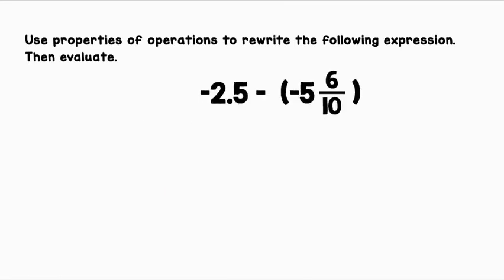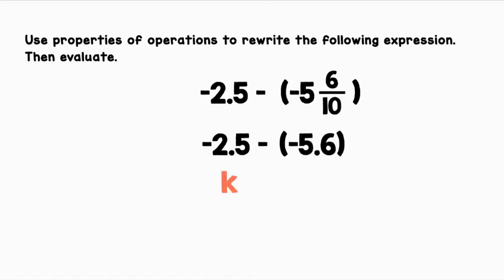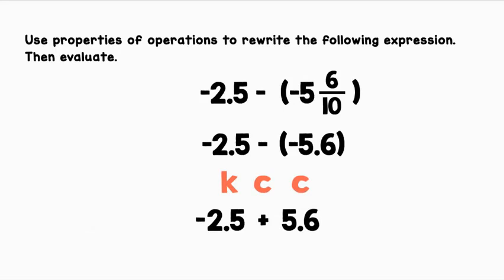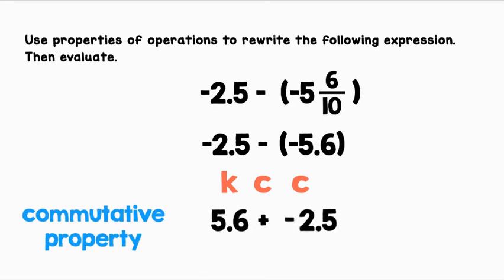Use properties of operations to rewrite the following expression, then evaluate: negative 2.5 minus negative 5 and six tenths. First, let's convert all rational numbers to the same form — I like to convert fractions to decimals: negative 2.5 minus negative 5.6. Next, let's use the additive inverse. Let's keep negative 2.5, change subtraction to addition, and change negative 5.6 to positive 5.6. We can use the commutative property to make this look a little better: 5.6 minus 2.5 equals 3.1.